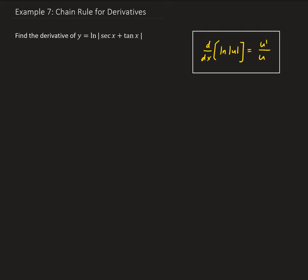So we're going to get y prime, which is dy dx, and this is u. We're going to have 1 over secant x plus tangent x, and then we're going to take the derivative of secant x plus tangent x.